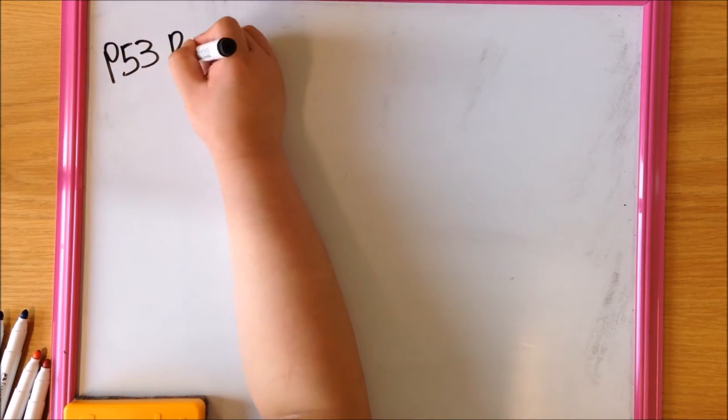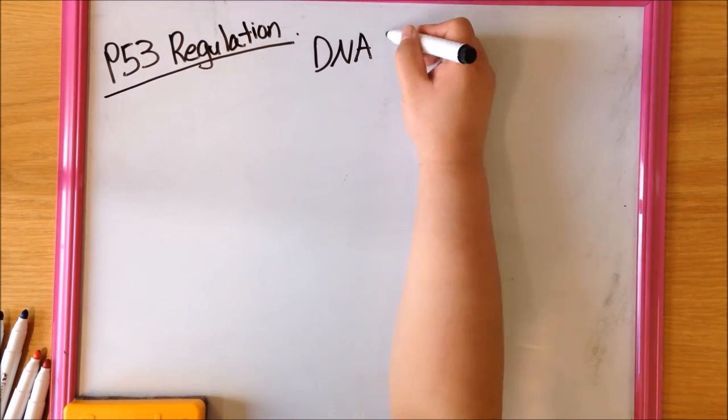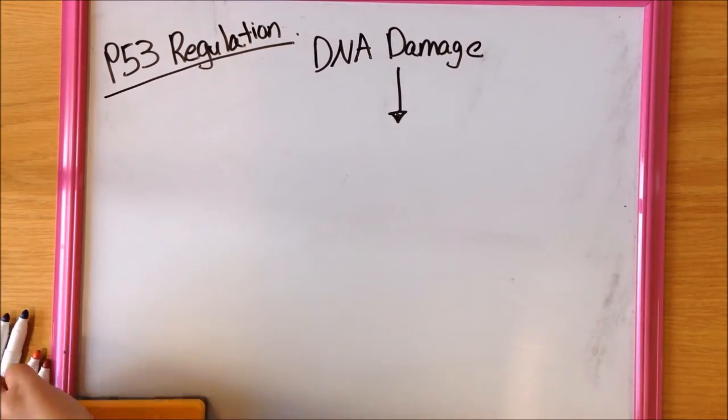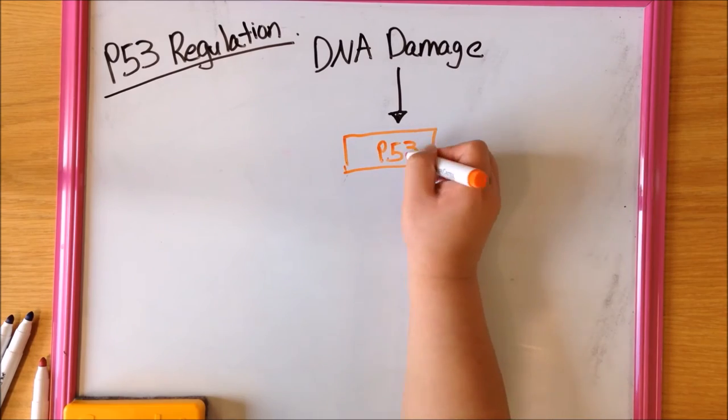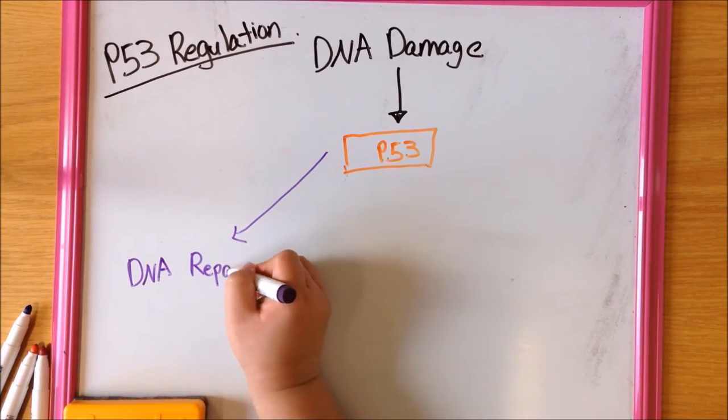P53 is another important tumor suppressor gene. It activates DNA repair proteins when DNA has sustained damage, and by arresting the cell cycle at G1S, it gives DNA repair mechanisms time to repair the DNA damage before the cell continues through the cycle.